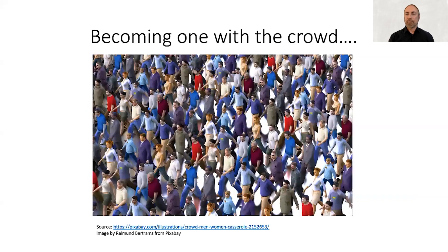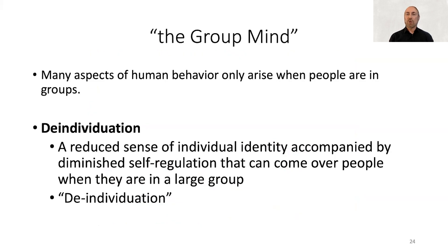So what is deindividuation? The simplest way to explain it is that it's a circumstance in which you become one with the crowd — you are melting into this crowd. Some people would call this the group mind: when you're in a group, you're no longer just thinking for yourself, but rather the way you think and react melds with what everyone else is thinking and doing. Deindividuation really refers to this reduced sense of individual identity accompanied by a diminished sense of self-regulation or self-responsibility that can come over people in a large group. The way to think about this long word is that it is the undoing — that's the D part — the undoing of our individuality.